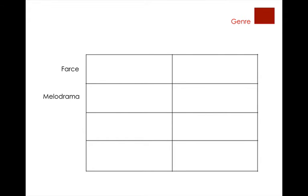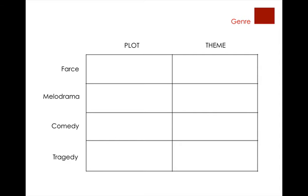The four genres are farce, melodrama, comedy, and tragedy. As we talk about these, we're more interested in how we communicate to an audience in these different genres using plot and theme, because these will highly influence the designs that we'll produce. In plot, we're talking about the action of the piece — the actual storyline that carries us from the beginning to the end. We're going to use some terms to help define plot for these four different genres.